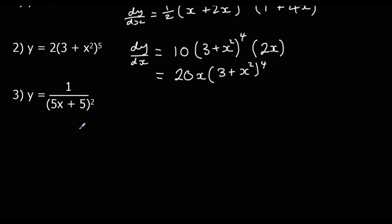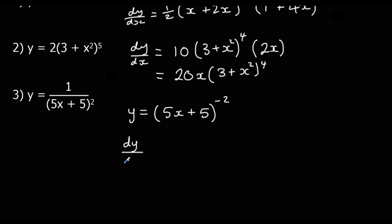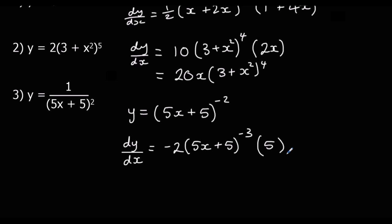Question 3: we're going to change 1 over something squared to the power of negative 2, so we'll have 5x plus 5 to the power of negative 2. Now we differentiate around the bracket, multiply by the power, and take one off the power. Then we multiply by the bracket differentiated, which is 5. Simplifying: negative 2 times 5 is negative 10, so we'll have negative 10 on the outside and 5x plus 5 to the power of negative 3.